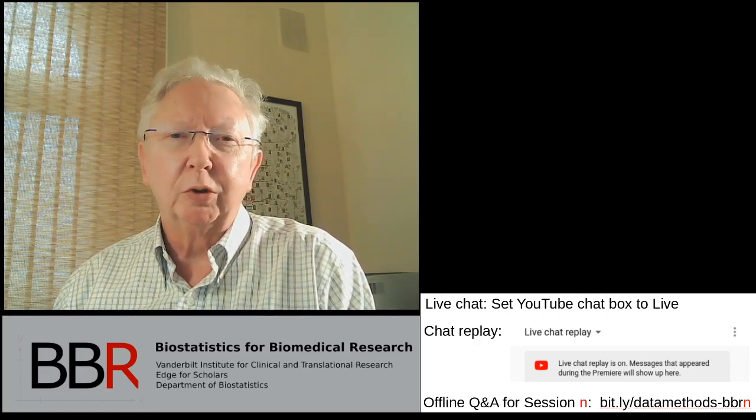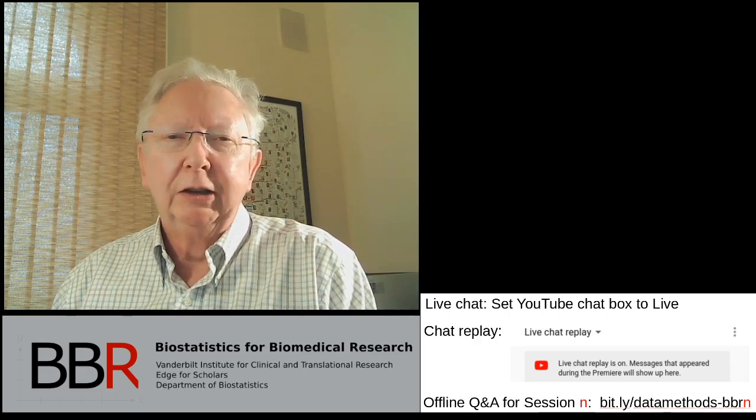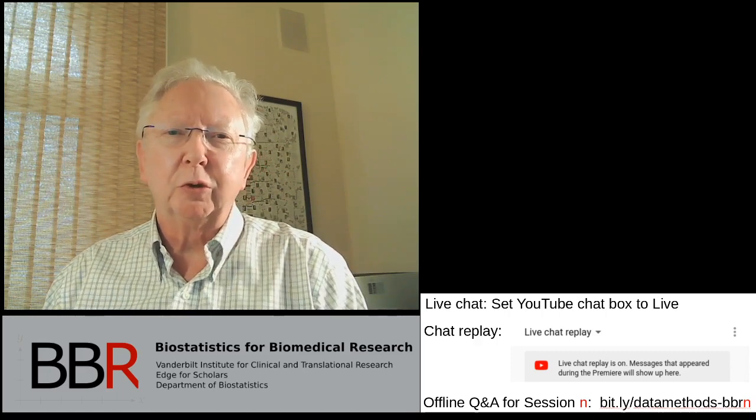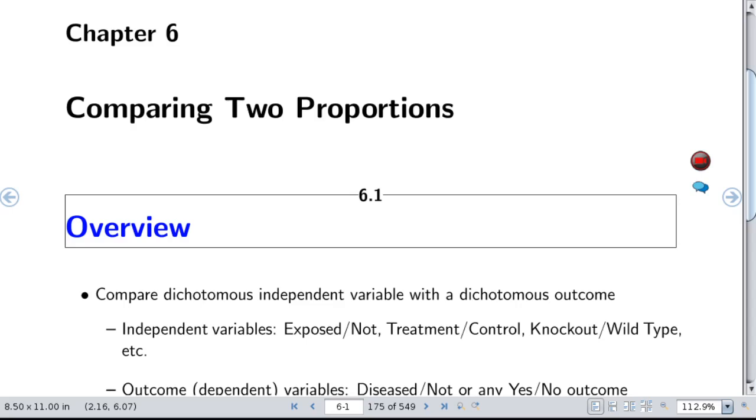Welcome everyone to Biostatistics and Biomedical Research Session 8, and Happy New Year! Today we're going to be comparing two proportions, which should seem like one of the simplest things to do in statistics. But as we'll see, there's a lot more to it, and in the frequentist world there are several issues with regard to inability to get truly exact calculations. The notes shown were last updated on January 2, 2020.